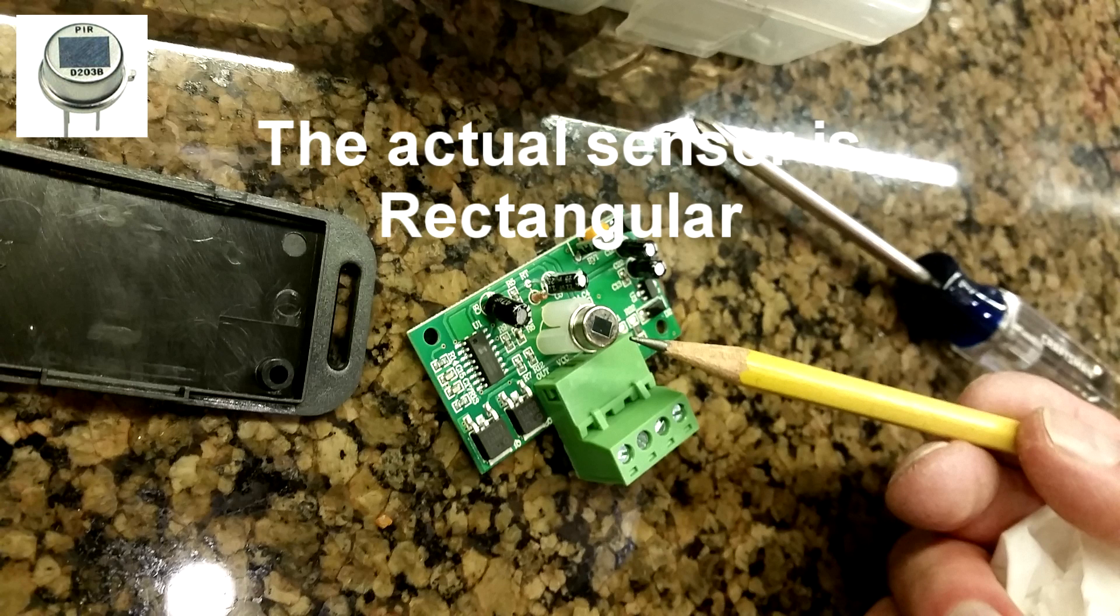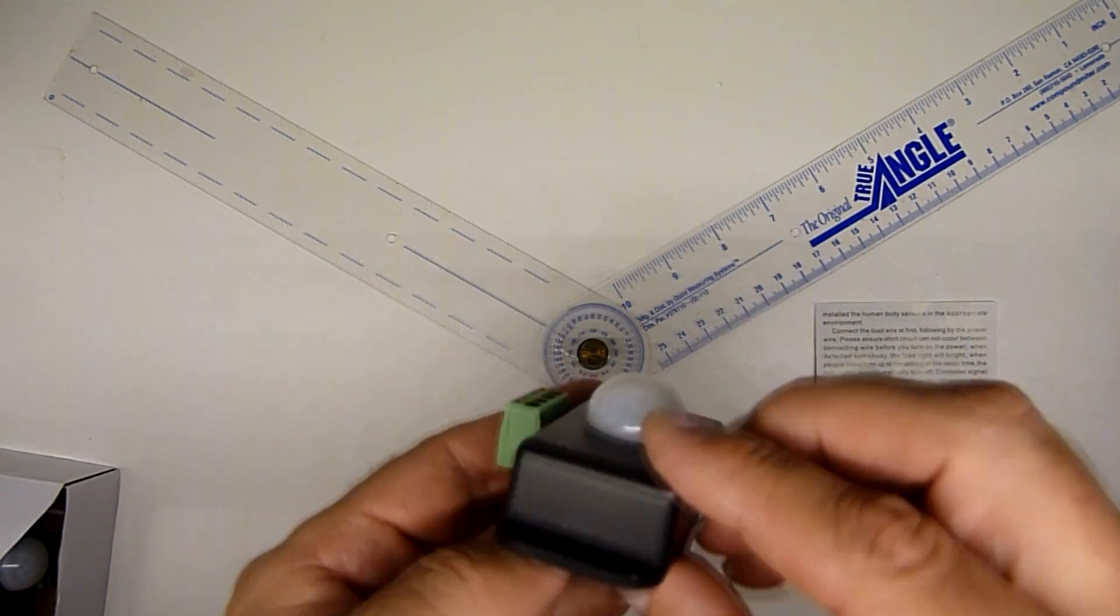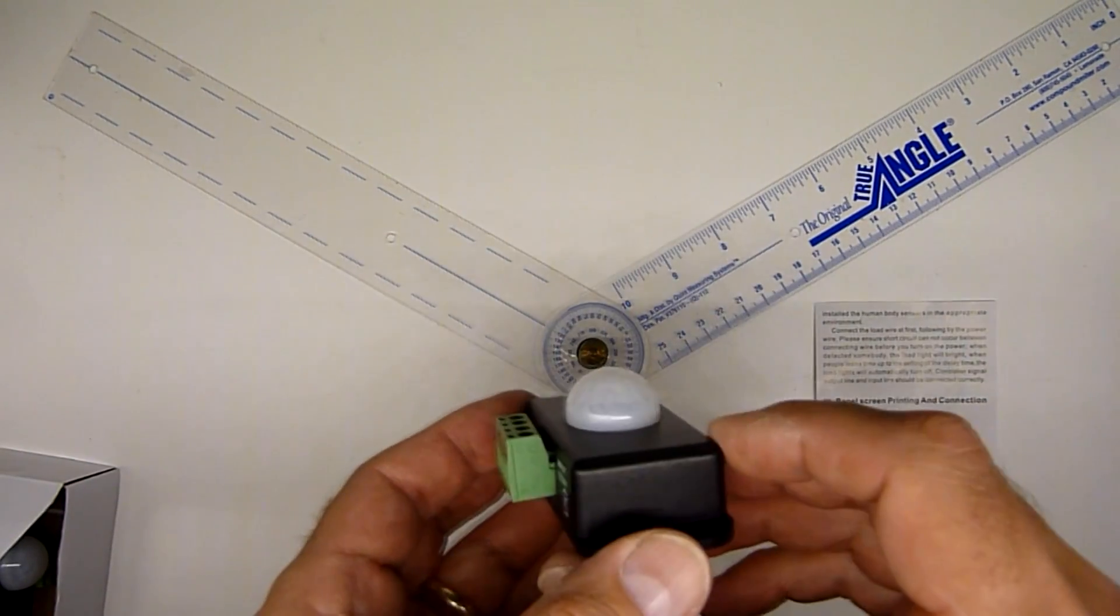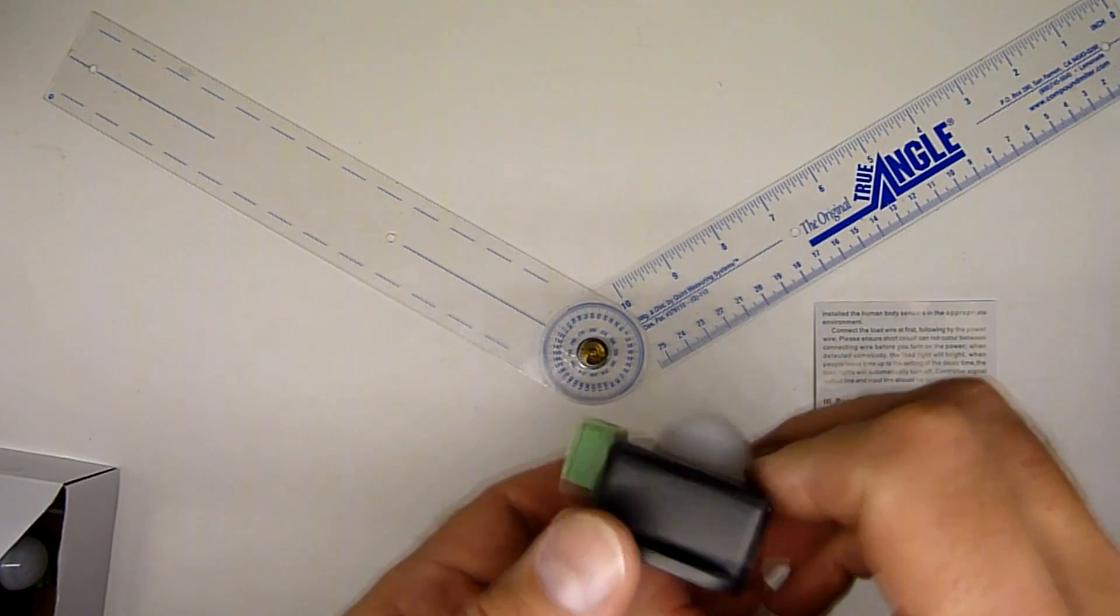The sensor inside of this and most of the others are rectangular, which means that the coverage in this direction is not necessarily the coverage you're going to get in that direction. So to get it the way you want, you really have to play with it a little bit.